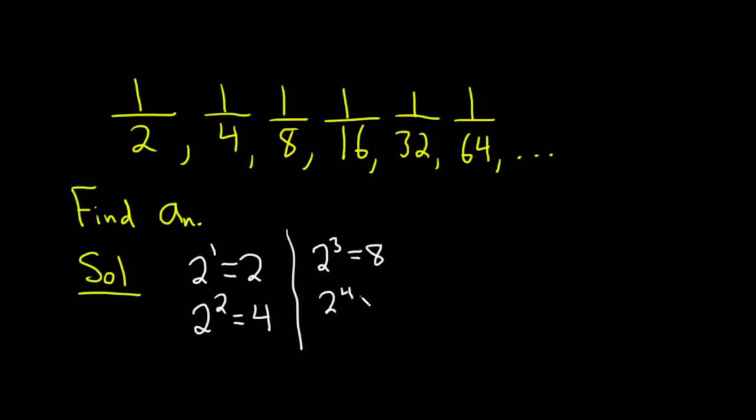2 to the fourth is 16, 2 to the fifth equals 32, and 2 to the sixth equals 64, et cetera.